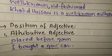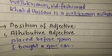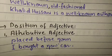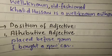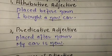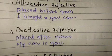Adjectives can be placed in different positions. An attributive adjective is placed just before a noun. For example, 'I bought a new car' — 'new' is the attributive adjective placed just before the noun 'car.' A predicative adjective is placed just after the noun or subject. For example, 'my car is new' — 'new' comes after 'car.'